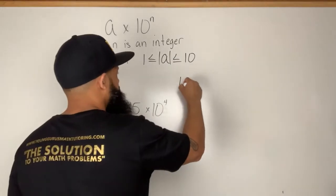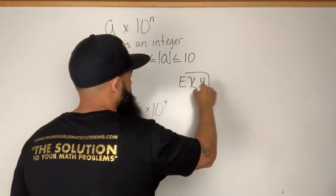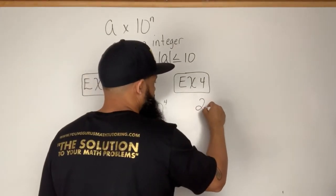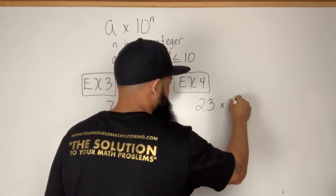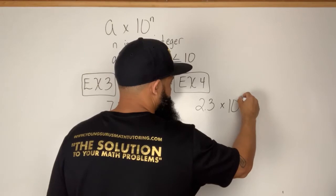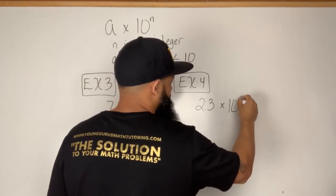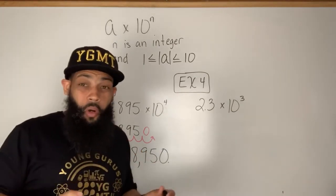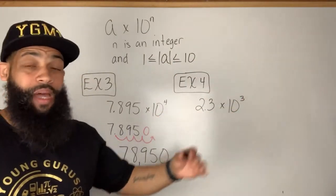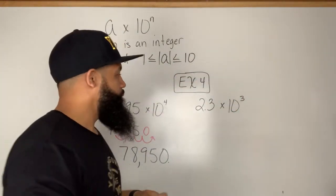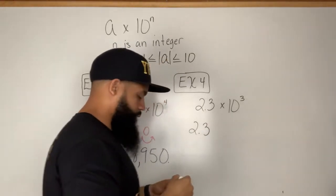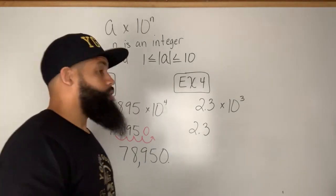Let's do one more example. If I have 2.3 times 10 to the third power — I'm using small exponents right now, but no matter how large the exponent, if it were to the tenth power I'd move the decimal ten times to the right. So I take 2.3 and move the decimal to the right.